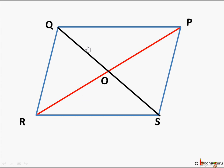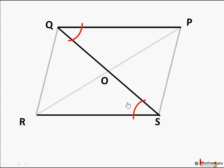Let's try to find out why. Consider the small triangles OPQ and ORS. We know opposite sides of the parallelogram are equal, and in any two parallel lines, if a diagonal intersects them, the alternate interior angles — like angle RSO and angle PQO — are equal.